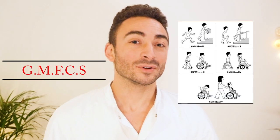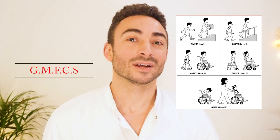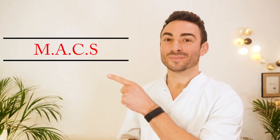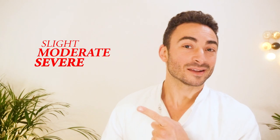The severity of the cerebral palsy can be assessed using the Gross Motor Function Classification System. To assess the upper limbs, you can use the MACS score. Depending on the person, the severity might be slight, moderate, or severe.